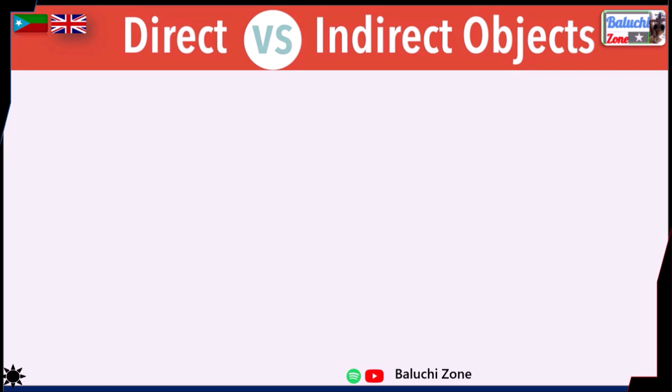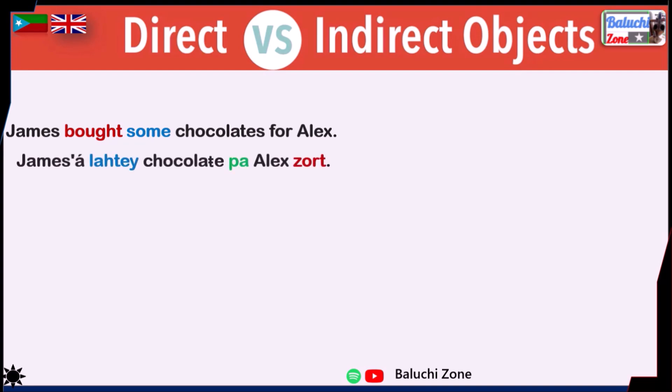Starting with direct object. The English sentence is: 'James bought some chocolates for Alex.' In Bellucci, you can say: 'James O lahti chocolate pa Alex zort.' Or you can also say: 'James O lahti chocolate pa Alex gipt.'